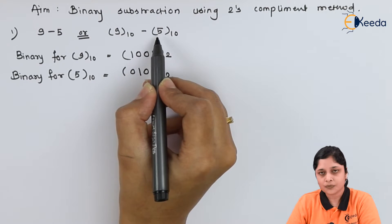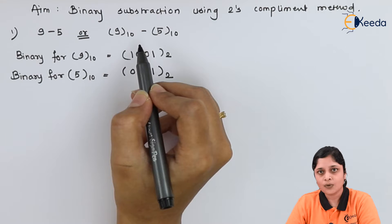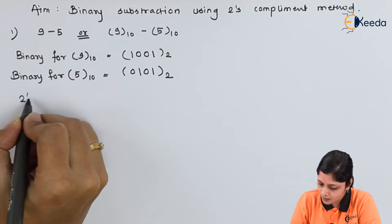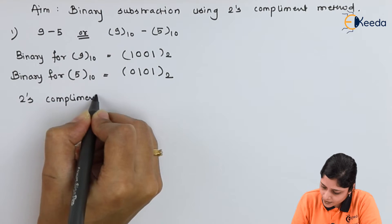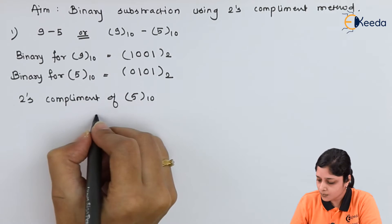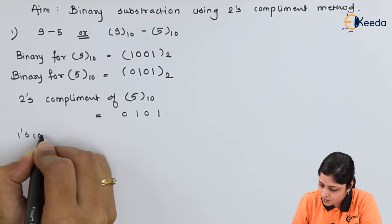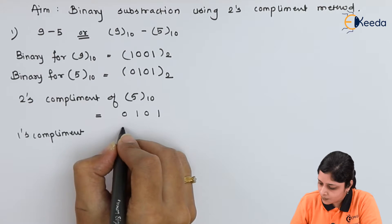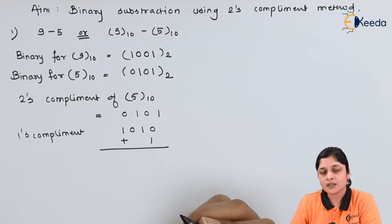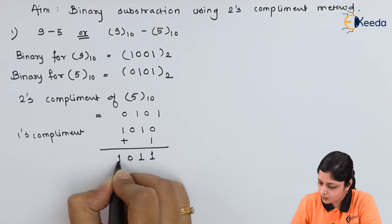The negative part is 5, since we have 9 minus 5 — 9 is positive and 5 is negative. So the next step is to calculate the 2's complement of 5. The binary of 5 is 0101. Its 1's complement is 1010, then add 1, giving 1101. This is the method to calculate the 2's complement.